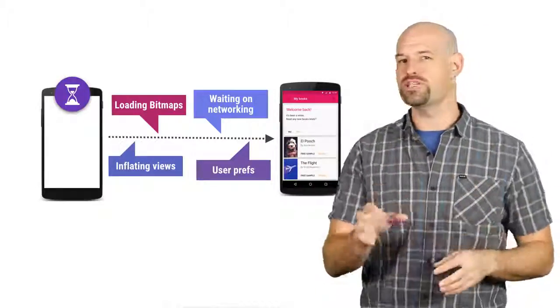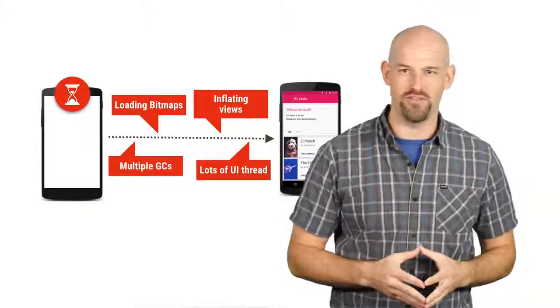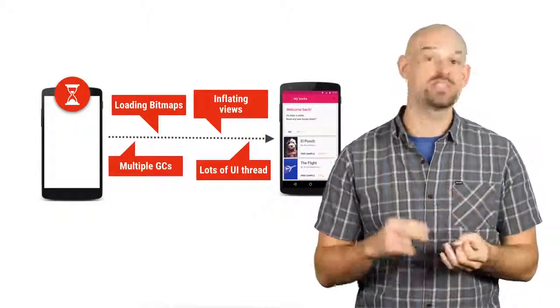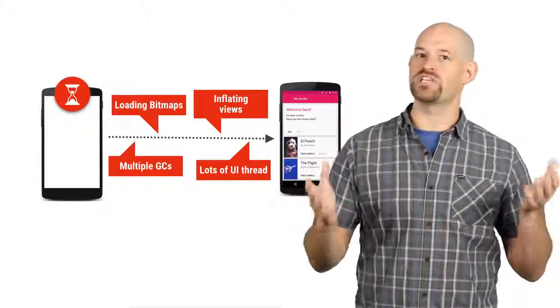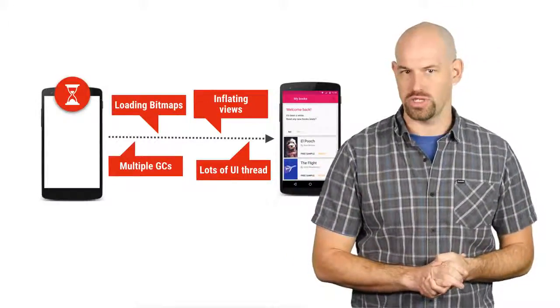But if you're not careful, each of these little operations can fall into their own performance pitfalls, things like multiple garbage collection events, or waiting to inflate views, or blocking on network requests, all things which can delay the time it takes for the first pixel to be shown to the user.